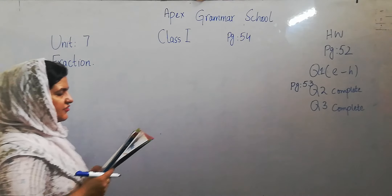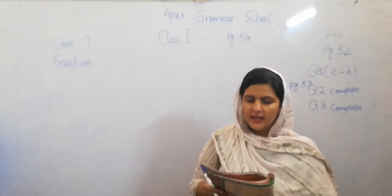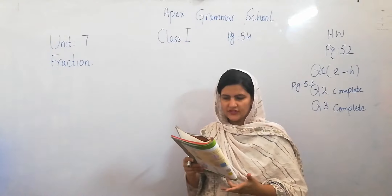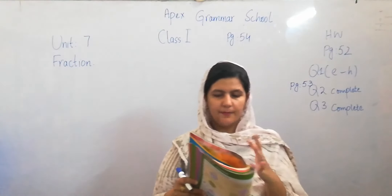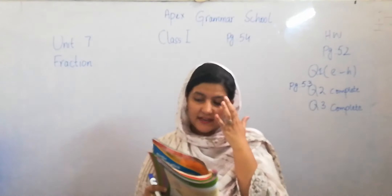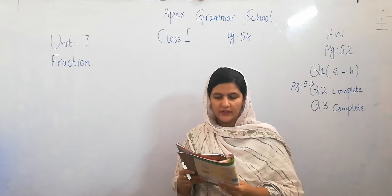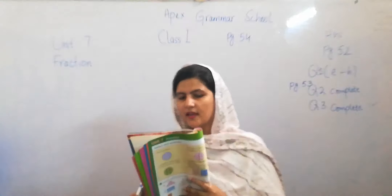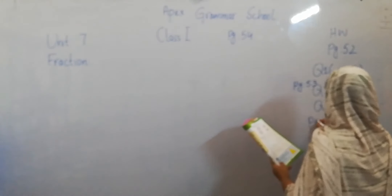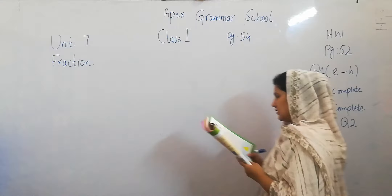Now question number two: which of these shapes has exactly 1 over 4? Same as question number one — in this question we identify the 1 over 4 shape, meaning the shape is divided into exactly 4 equal parts. Question number two is your homework.